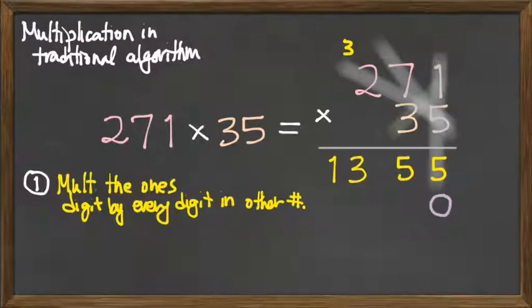I'll start by multiplying the three, the tens digit of the second factor here, with the ones digit of the first. Three times one. That's going to give me three. And that ends up in the tens place.